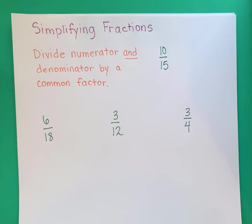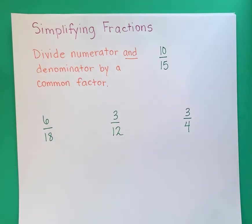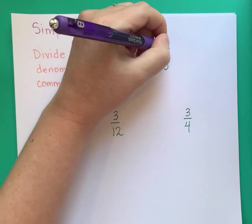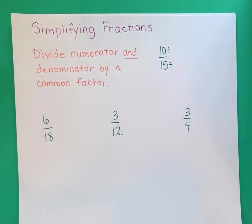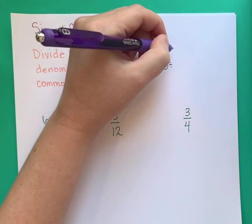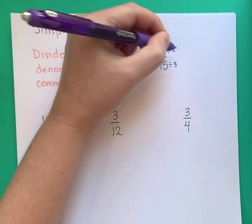They both have to be divisible by the same number, so you can't divide the top by one thing and the bottom by another. Let's use 10 over 15 as an example. I could divide 10 by 2 and 15 by 5, but that wouldn't work because those are not the same number. You have to divide by the same number. But 10 is also divisible by 5, so they have that in common. Any number that ends in 0 or 5 is divisible by 5, so I can use divisibility rules to know I can divide both of these by 5.